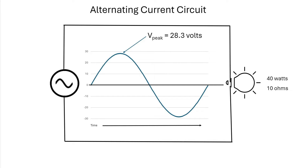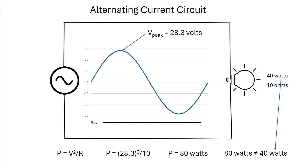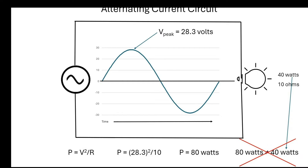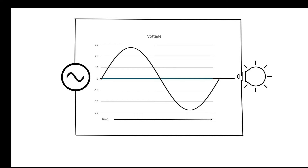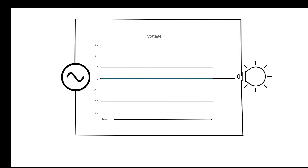What voltage does that AC power source need to deliver in order for that light bulb to consume 40 watts? Let's put in an alternating current voltage source — the peak voltage is 28.3 volts. Doing the calculation using voltage squared divided by resistance, we get the power of that light bulb is 80 watts. So if we use peak voltage in the calculation, 80 watts does not equal 40 watts. That voltage doesn't work for comparing DC and AC circuits. If we simply take the average of all voltages along the sine wave, we get zero, because there are equal numbers above and below zero on the graph.